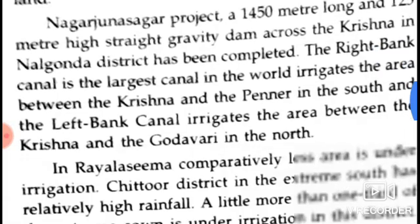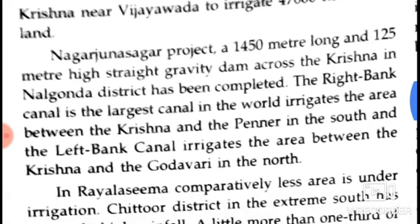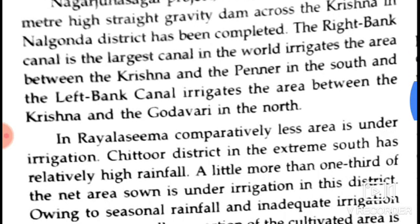The Nagarjuna Sagar project features a 450-metre long and 125-metre high straight gravity dam built across the Krishna River in Nalgonda district. The right bank canal is the largest canal in the world and irrigates the area between the Krishna and the Penner in the south. The left bank canal irrigates the area between the Krishna and the Godavari in the north.